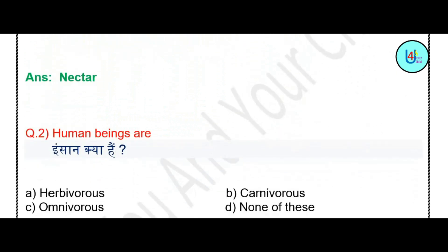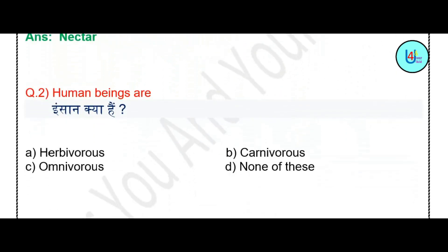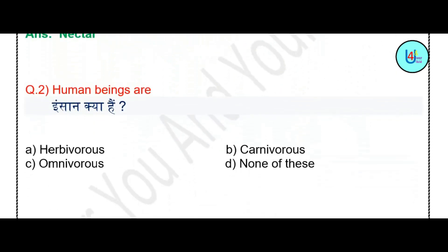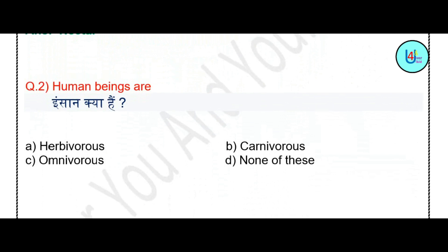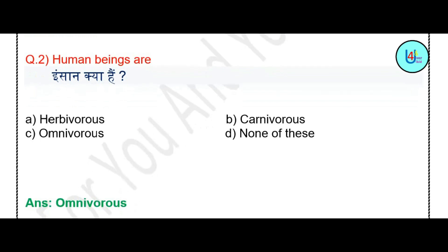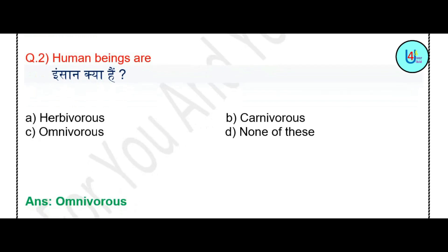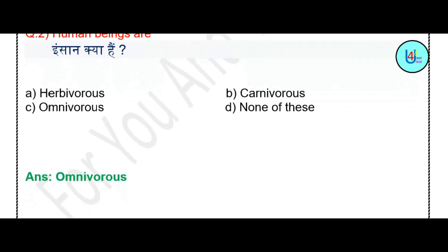Question number 2: Human beings are — herbivores, carnivores, omnivores, or none of these? The correct answer is omnivores.